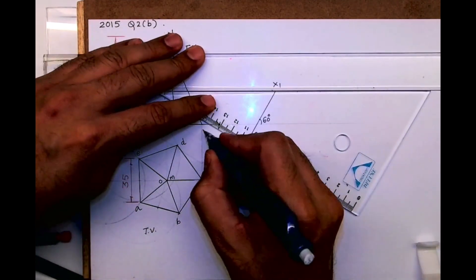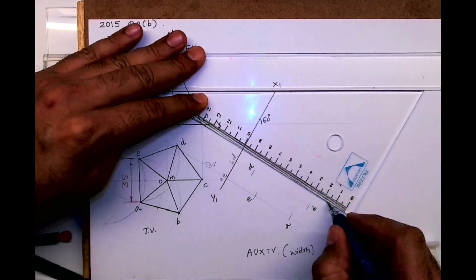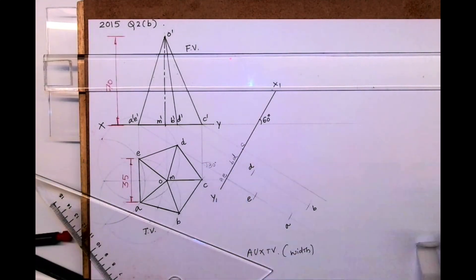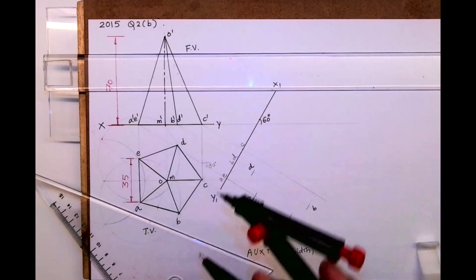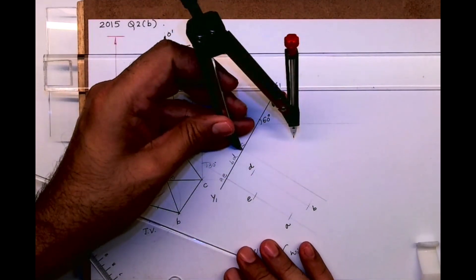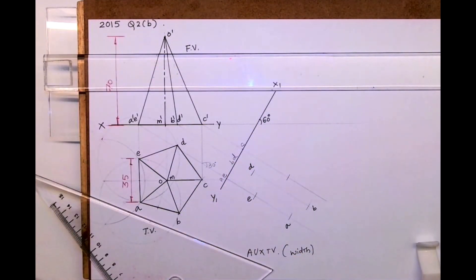Then from C, XY to C - you take XY to C and cut from here, so you'll get point C.